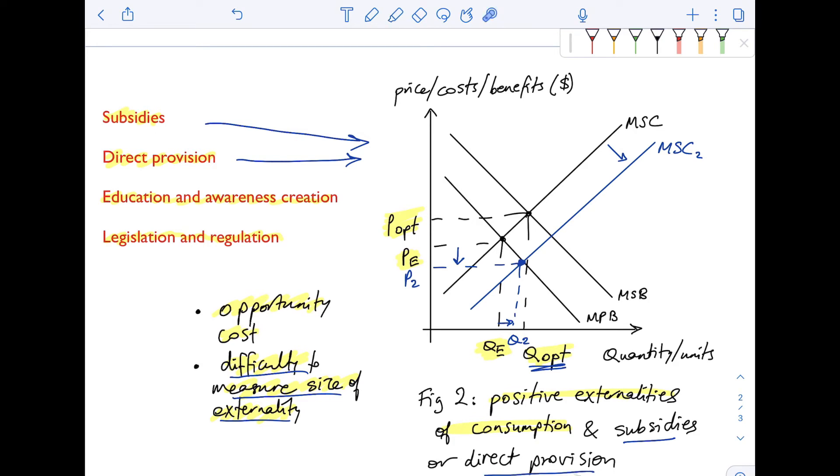So remember, in the case of positive externalities of consumption, subsidies and direct provision will actually increase the supply, they will not change the demand.